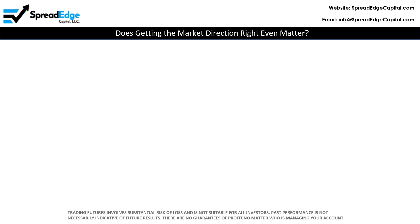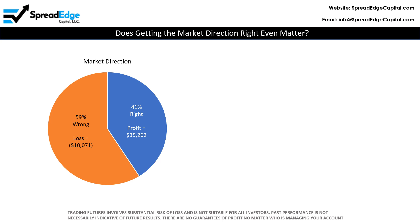So given that we only got the market direction correct 41% of the time, does market direction really even matter? If we add spread profitability to the market direction pie chart, we see that spreads are highly profitable when we get the market direction correct. For this data set, the profit is just over $35,000. Note that all profits presented are net of all fees and commissions. We also see that spreads are not profitable when we do get the market direction wrong. In this case, the loss is just over $10,000.